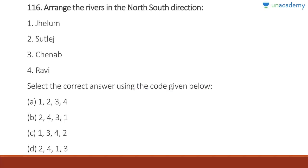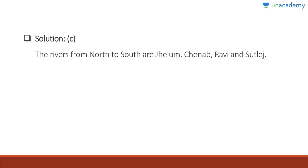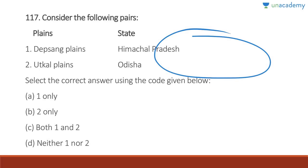Question 116: Arrange the rivers in north-to-south direction. Looking at the map of Punjab, the rivers from north to south are: Jhelum (northernmost), then Chenab, then Ravi, then Sutlej. Answer is C — the order is one, three, four, and two.